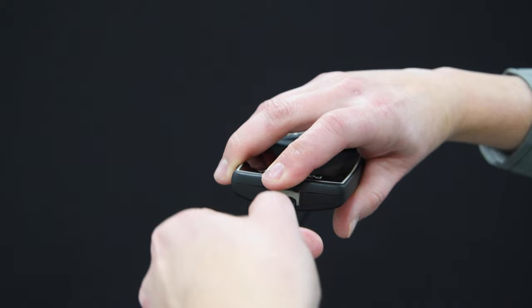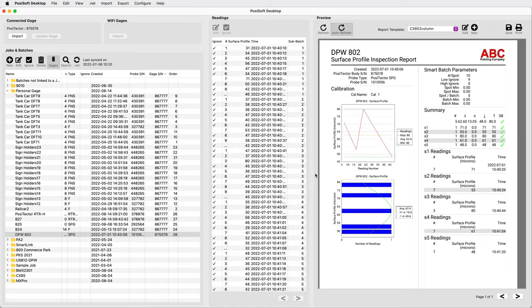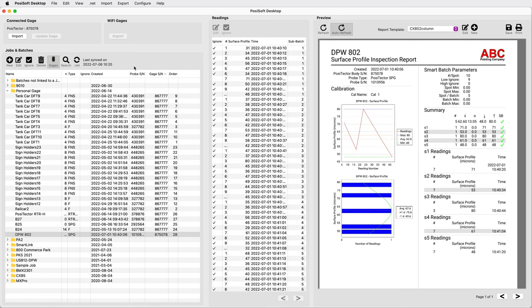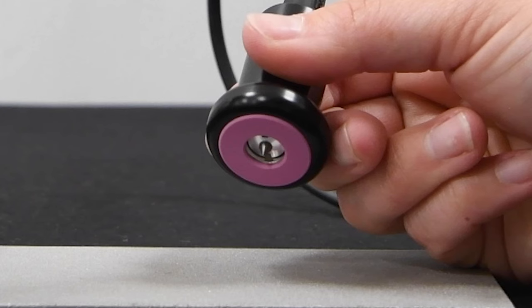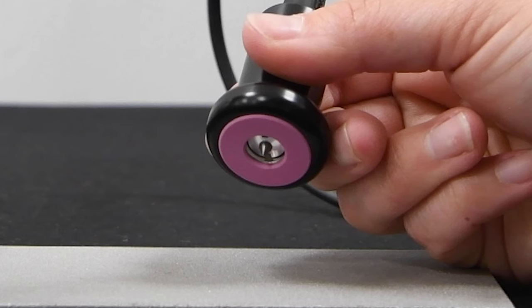Once measurement is complete, connect to the included PosiSoft desktop software using a USB cable or Wi-Fi to archive and manage measurements. Professional custom reports can instantly be generated, including multi-batch reports.